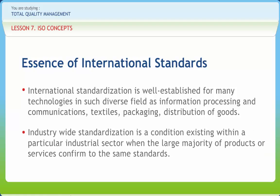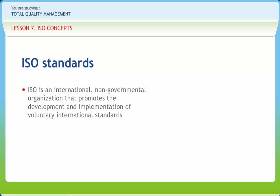Industry-wide standardization is a condition existing within a particular industrial sector when the large majority of products or services conform to the same standards. They agree on specifications and criteria to be applied consistently in the choice and classification of materials, the manufacture of products, and the provision of services. Assurance of conformity can be provided by the manufacturer's declaration or by audits carried out by independent bodies. ISO is an international non-governmental organization that promotes the development and implementation of voluntary international standards.